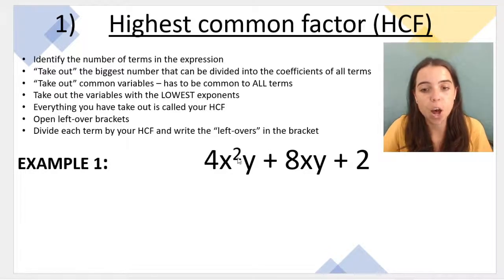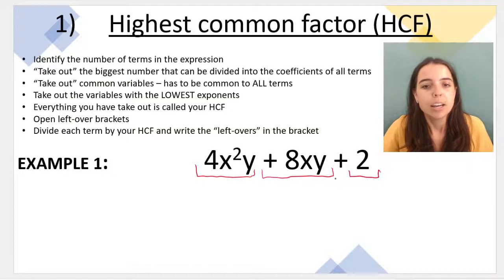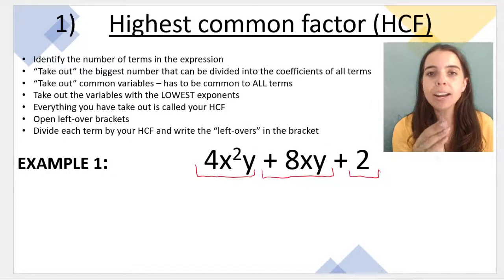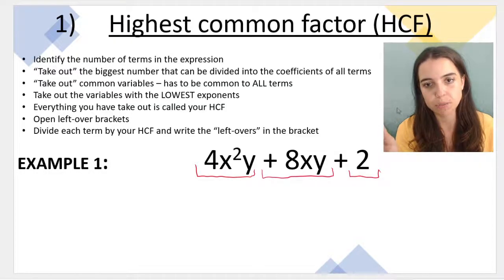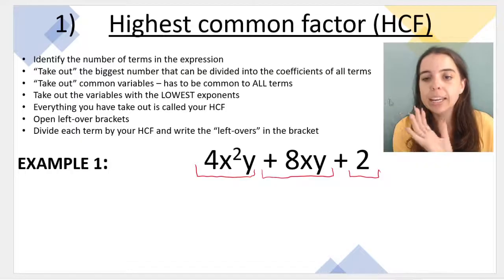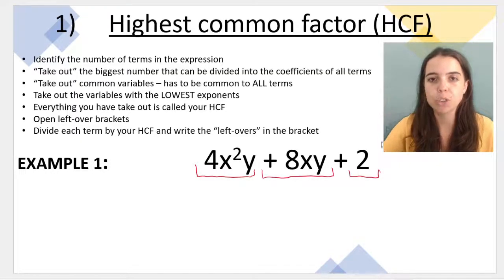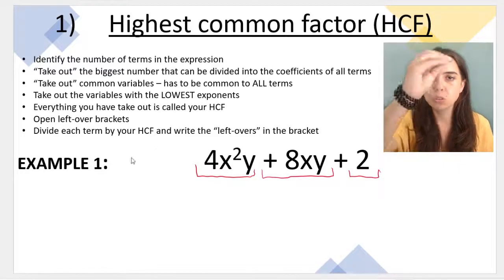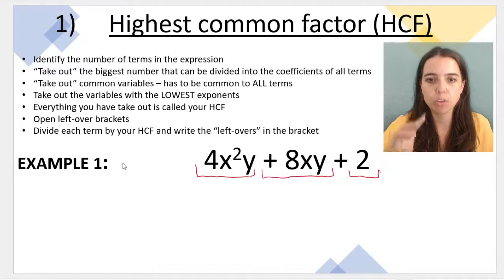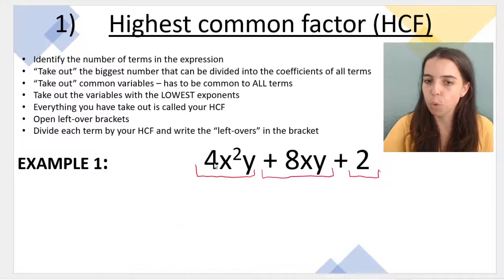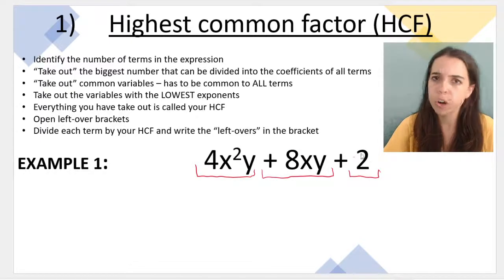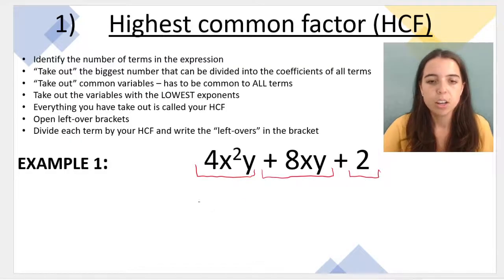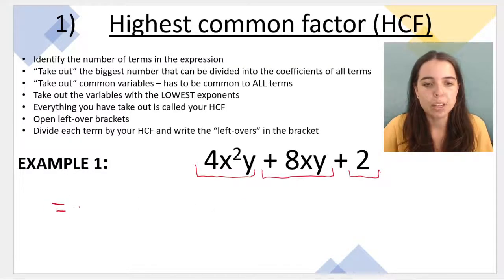In this first example we have three terms — remember terms are separated by pluses and minuses. We need to ask: can I take something out of all three terms? Can I find a number that divides into all three coefficients — the 4, the 8, and the 2 — without a remainder? Yes: the number 2 goes into 4, 8, and 2 without a remainder. We can't take out 4 because 4 can't go into 2 without a decimal, so part of our highest common factor is 2.